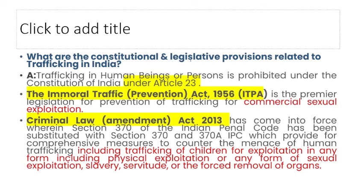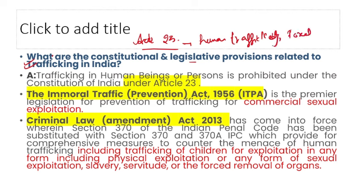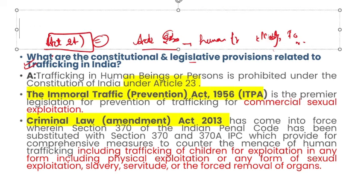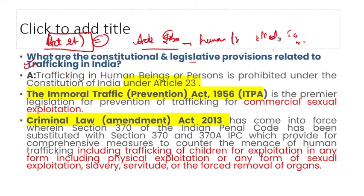Now for constitutional and legal provisions related to trafficking in India: Article 23 deals with human trafficking and forced labor. Article 24 deals with the employment of children — do not confuse these two. Article 23 is about human trafficking and forced labor. In the Fundamental Rights chapter, you will also see the term 'BEGAR' (B-E-G-A-R) which is forced labor — not to be confused with 'Beggar'.